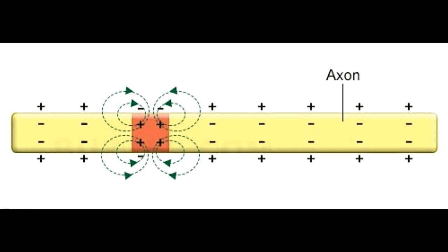In diseases where myelin gets stripped off neurons, it is very well possible that an impulse can be wrongly transmitted to the axon of another demyelinated neuron. This can cause faulty sensation as well as cognition, thus leading to incorrect responses.